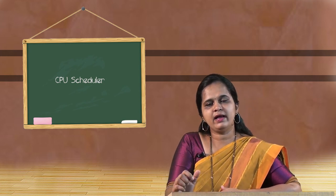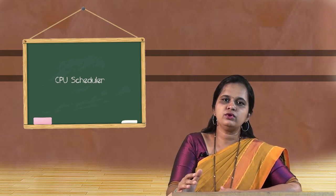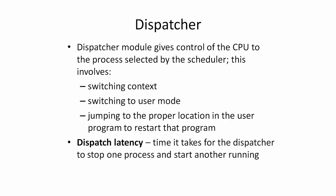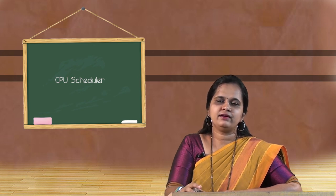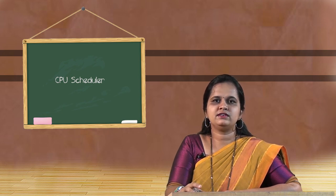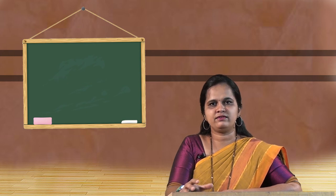Next, having seen what the CPU Scheduler is, we should also see what the job of the dispatcher is. The dispatcher is the one which gives control of the CPU to the process. It is something like you are at the gate and the CPU decides who should enter — and finally, after entering the gate, the dispatcher gives control of the CPU and decides that the CPU should go further. Next we shall discuss the dispatcher concept in the next slide of the same series.